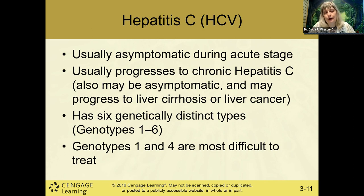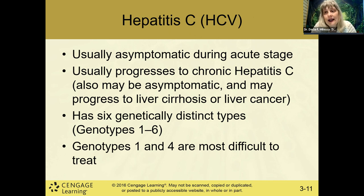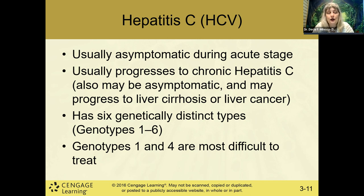Hepatitis C (HCV) can be asymptomatic initially. When it becomes acute it progresses rapidly. Chronic hepatitis C can progress to liver cirrhosis or liver cancer. There are six genetically distinct types of hepatitis C virus, and genotypes one through four are the most difficult to treat.